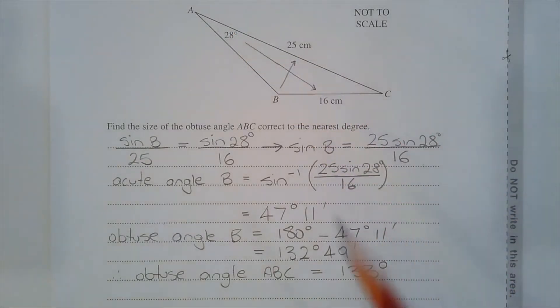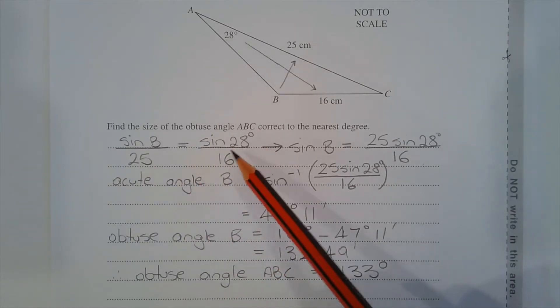There is a known angle side pair, so the sine rule will be used. Sine of B over 25 is equal to sine of 28 degrees over 16.